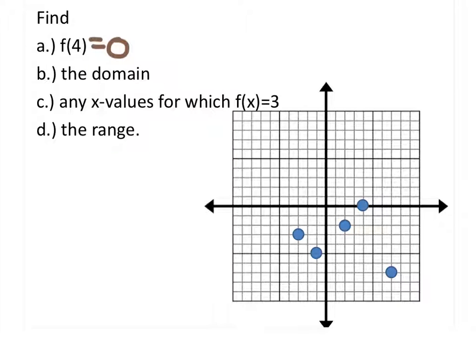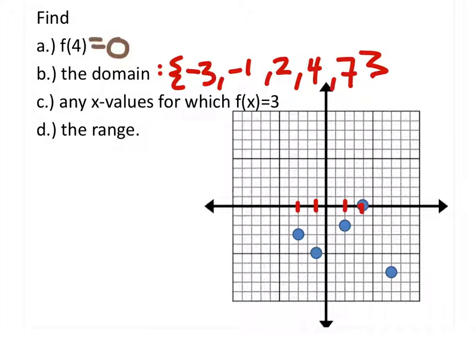Alright, the domain on this one. You see how there's not lines connecting the points anymore? So the domain is just going to be a set of numbers. The domain is all the x values. We have an x value at negative 3, at negative 1, 2, 4, and 7. Just a list of numbers.